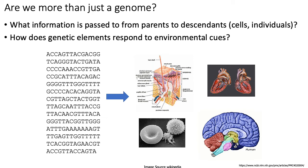Epigenetics, at least in the context of this lecture, is concerned with two questions. One is what information gets passed between parents and their descendants — the question of transgenerational inheritance, which can be studied at the level of parent and daughter cells, or between whole individuals. Epigenetics is also used to study how genetic elements respond to different environmental cues, and what mechanisms the cell uses to integrate information from both DNA and environmental cues to change gene regulation.